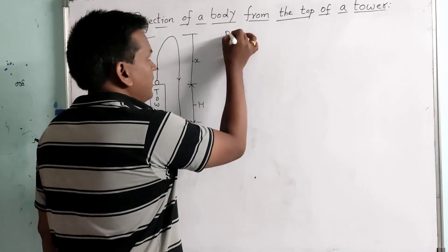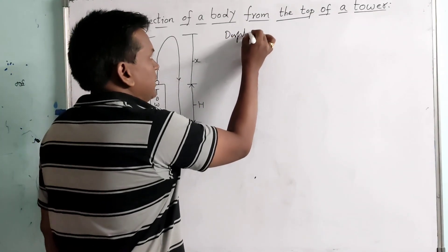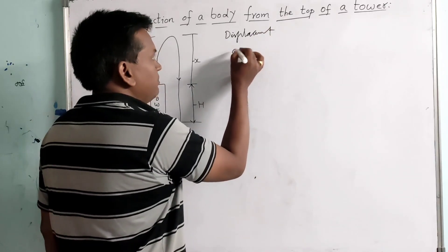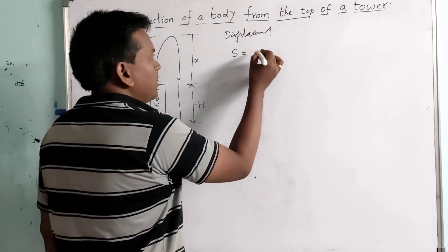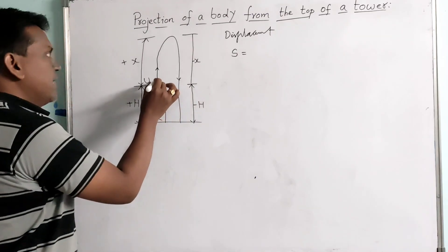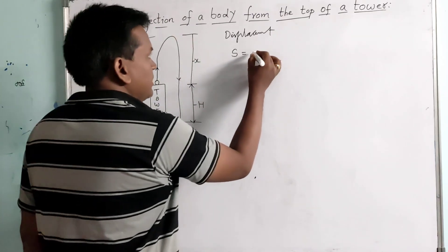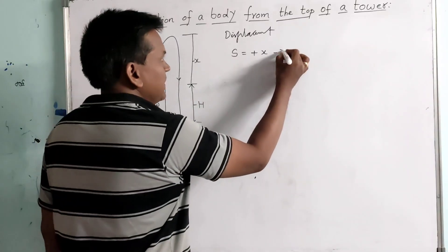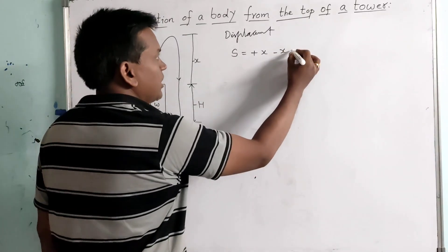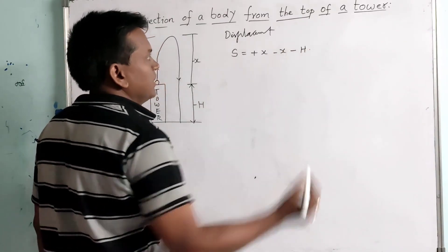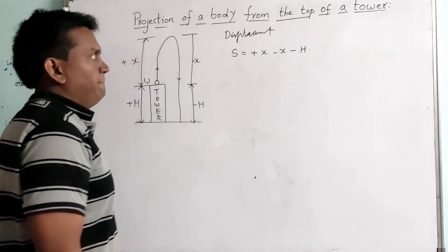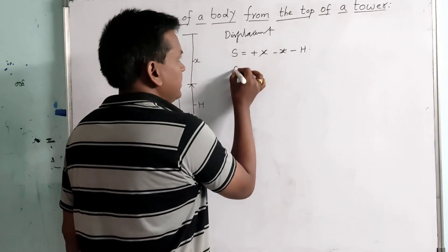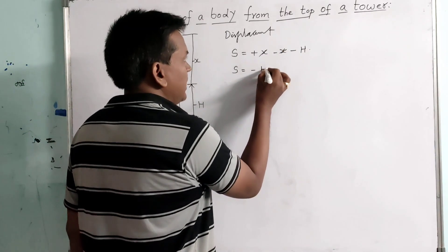The displacement made by the particle: S equals — it has started here, so that is plus X, then came back, so minus X, and it reached the ground, so minus H. If you cancel minus X and plus X, we have S equal to minus H.